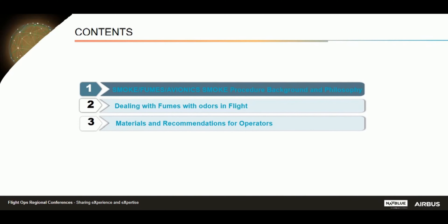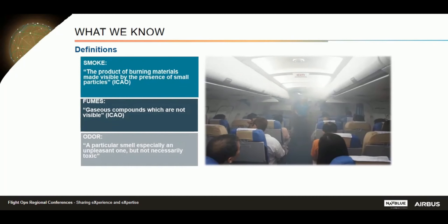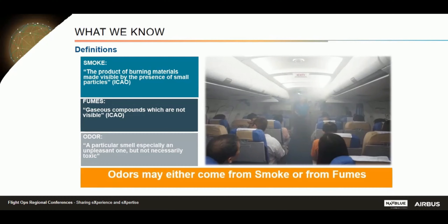Let's start with some background. It's very important that we all have in mind the meaning of the wording used in our procedures. First, the definition of smoke: this is the product of burning material made visible by the presence of small particles. This is the ICAO definition.